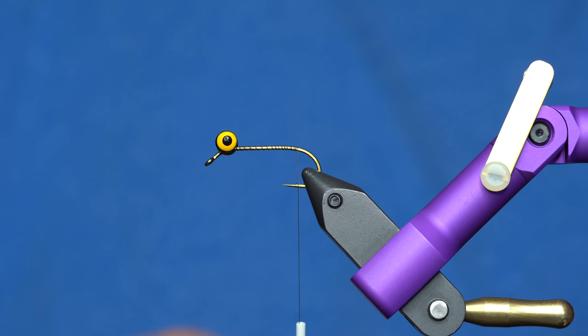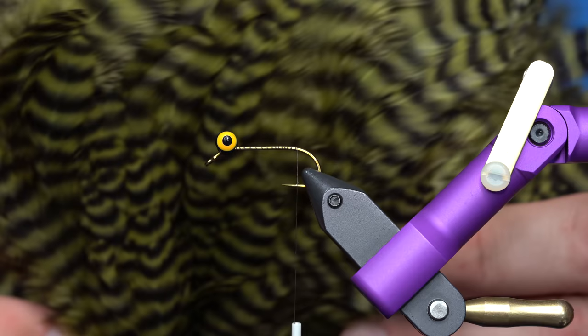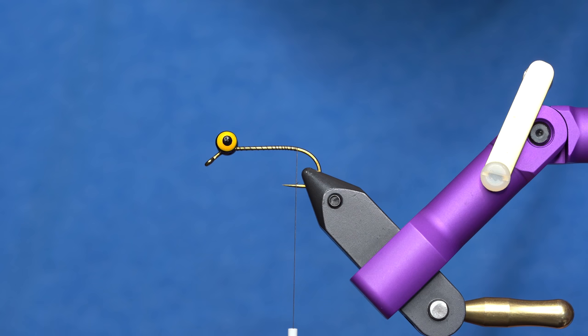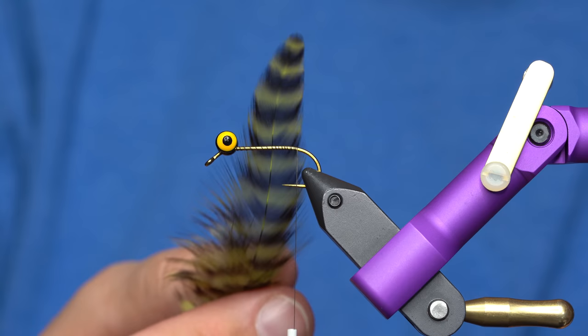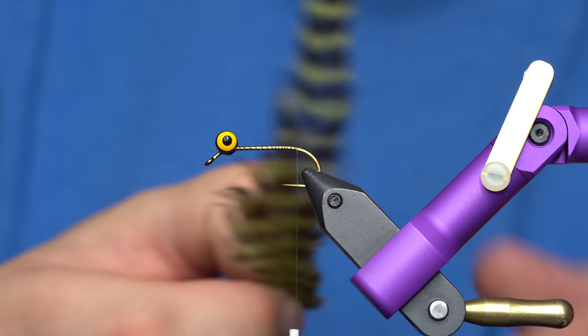You can use any feathers you want for this as long as they're kind of rounded and webby. So this is a whiting bugger patch. You can use a whiting hen saddle. Hens don't have the hackle. That's the roosters. So don't use the hen hackle. Use the hen saddle. So anyway, you want feathers that roughly look like this. So if you have any pelts out there that have that general shape, they will do the trick.